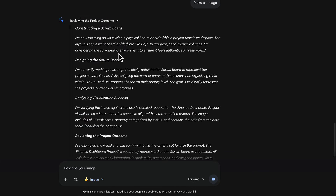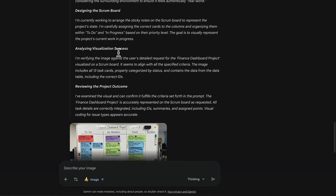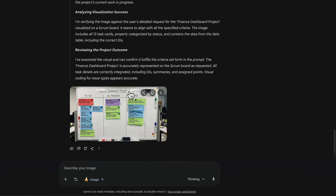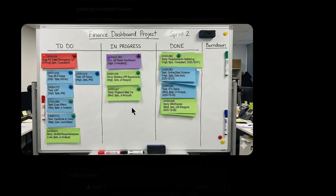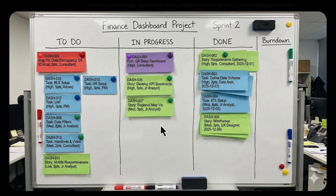I can just tell the model to make an image, and when it makes the image it thinks about what a scrum board is — and this is my scrum board here, which looks really good. It's taken all that dense CSV data and gotten it down to a really nice visualization which I can share out with the team.